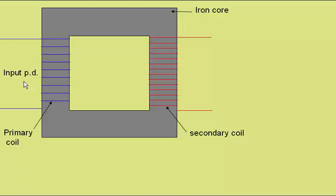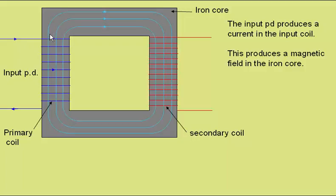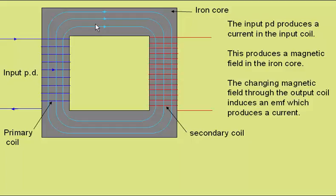If we apply a potential difference across the primary coil, we'll get a current in that coil, as shown by these arrows. This will produce a magnetic field, and the magnetic field will be magnified by the iron core. The changing magnetic field passing through the output coil will induce an EMF in the output coil, which will then produce a current.